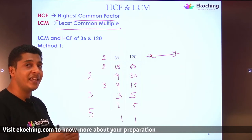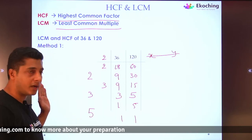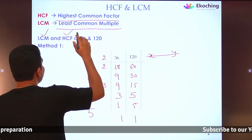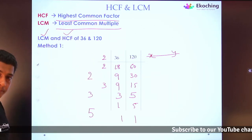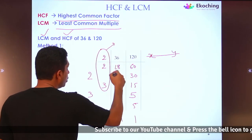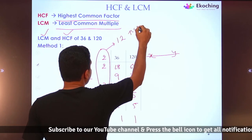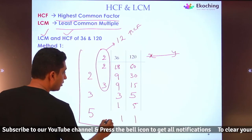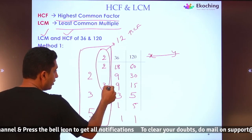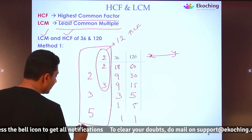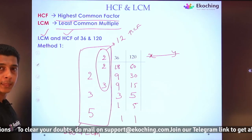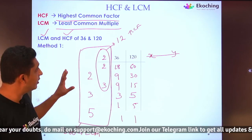In this single method we have found both LCM and HCF. HCF is the product of divisors that divided both numbers simultaneously: 2 × 2 × 3 = 12. LCM is the product of all divisors used: 2 × 2 × 2 × 3 × 3 × 5 = 360. This is the division ladder method — a single method to find both values.